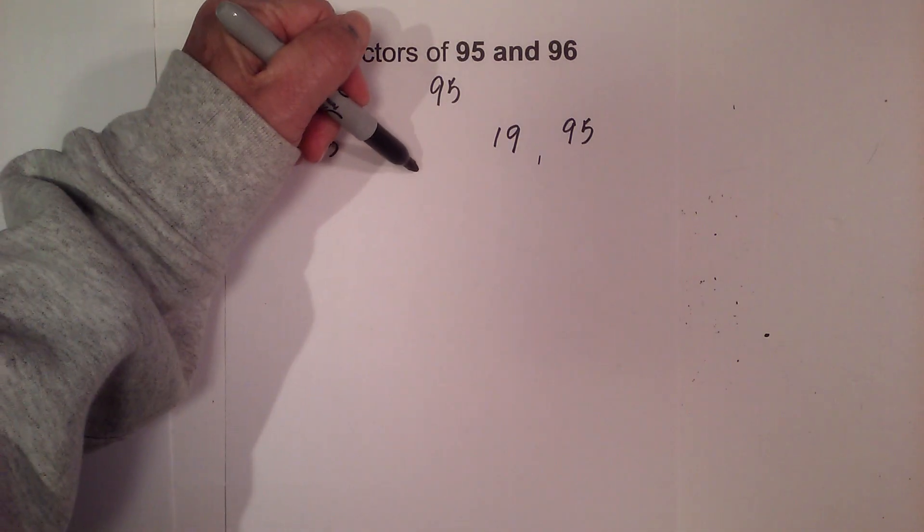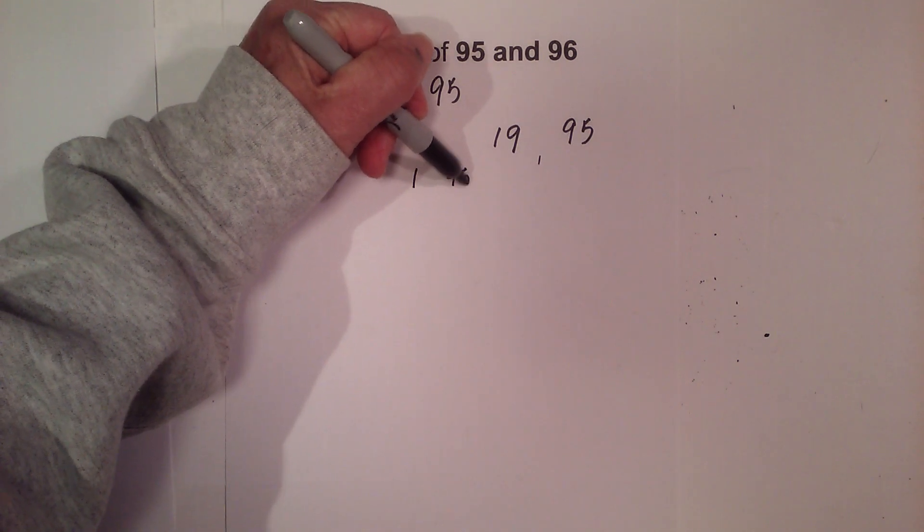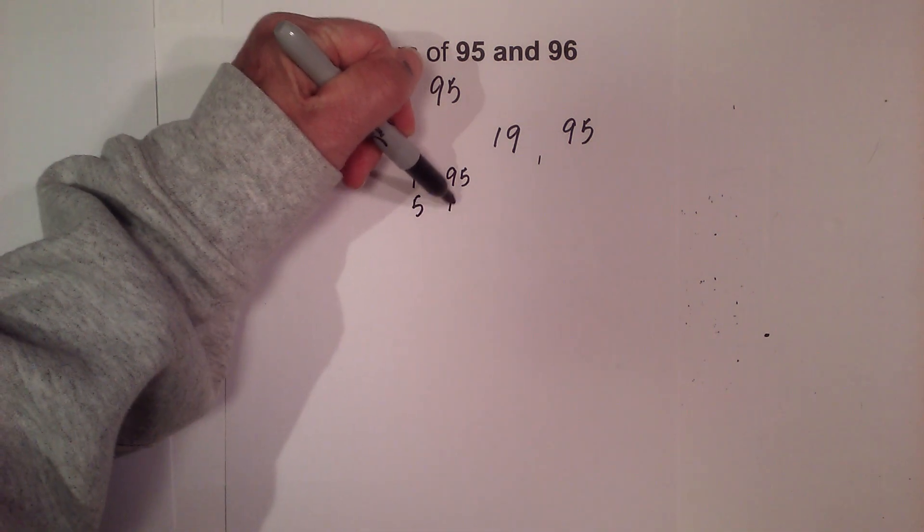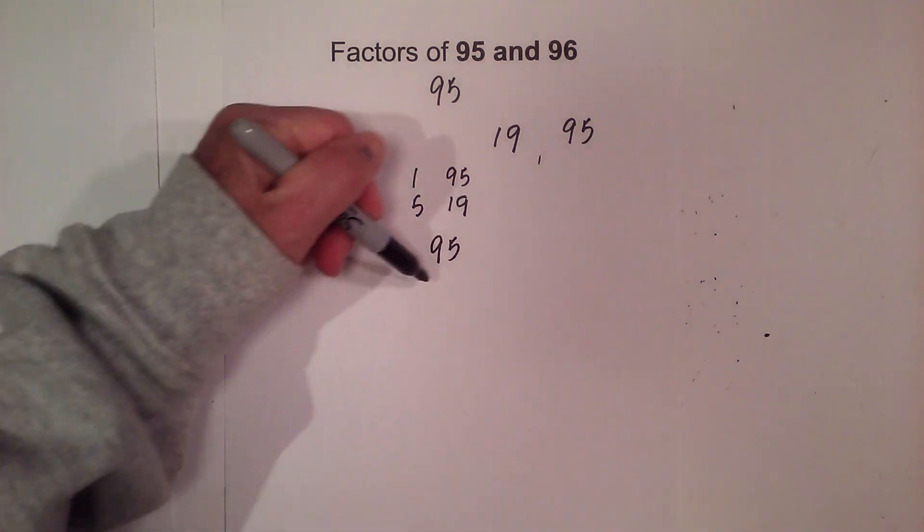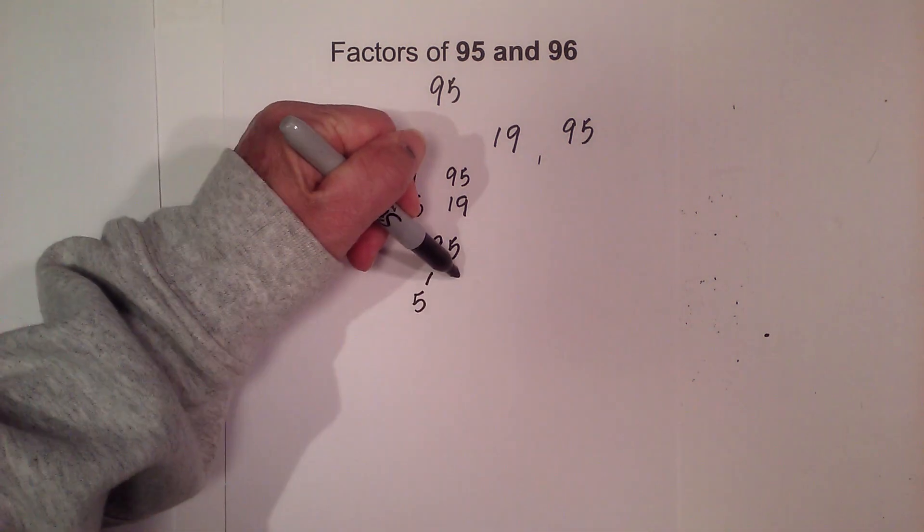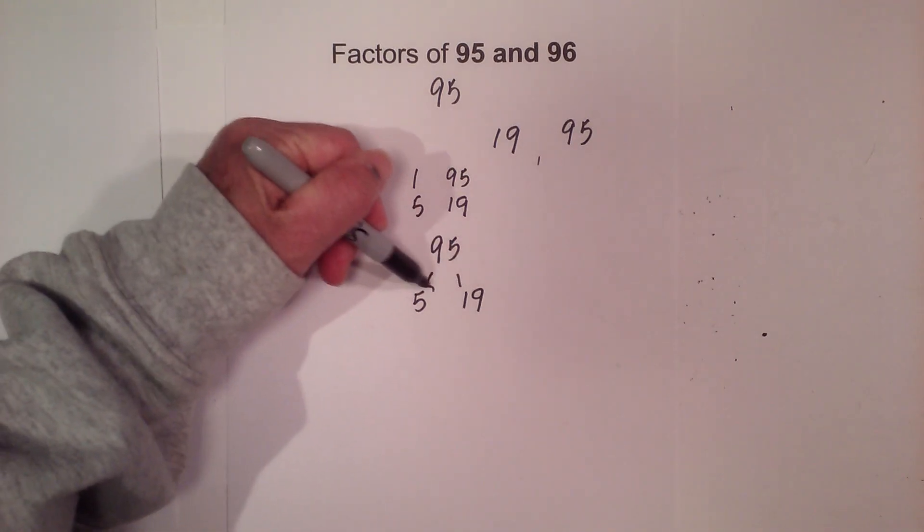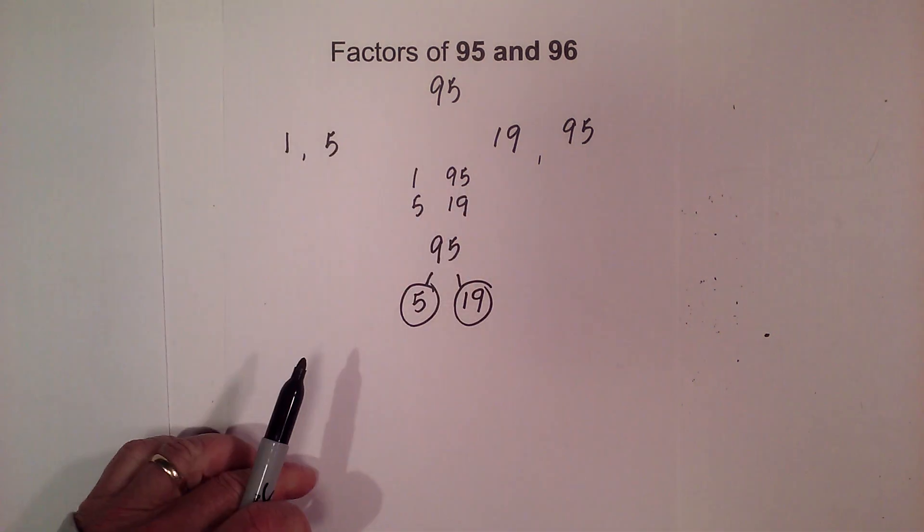The pairs of numbers are 1 and 95 and 5 and 19. Now to complete a factor tree for 95, it will not take long. I just go 5 times 19. Both of these numbers are prime, so the prime factors of 95 are 5 and 19.